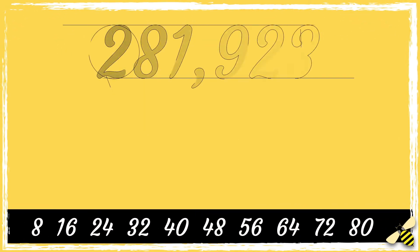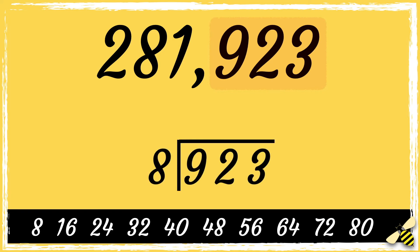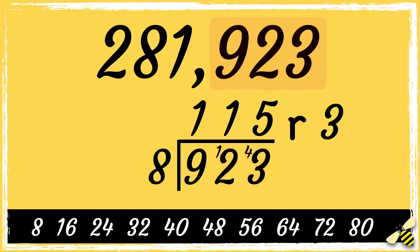Let's have a look at one more. Let's look at the last three digits of 281,923. I don't know from the top of my head if 923 is divisible by eight, so I'm going to do some short division to help me. Eight goes into nine once with one left over. Eight goes into 12 once with four left over. Eight goes into 43 five times and we have three left over. We have a remainder, so this number is not divisible by eight.